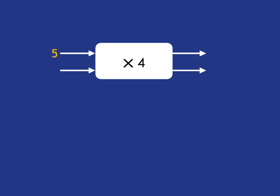Let's have a look at another example. Imagine now you've got a function machine that's multiplying by 4. Well, if you took your 5, you multiply it by 4, the output will be 20.